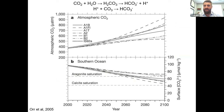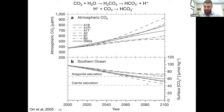IPCC scenarios predict aragonite undersaturation in the open ocean by around 2070 and calcite undersaturation around 2150 — but again, these are open ocean surface water conditions. The environments where a lot of the more vulnerable organisms live — estuaries and shelf environments — will see undersaturation much earlier; many are already undersaturated today.